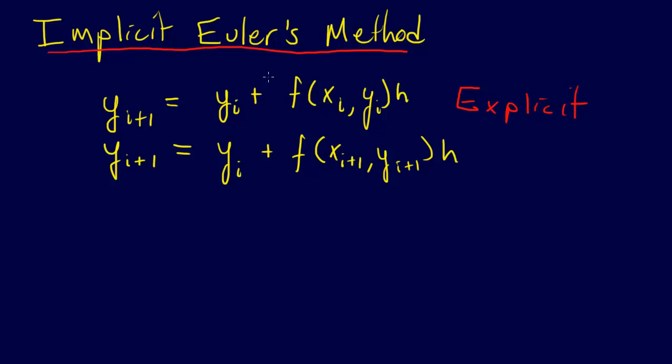So the explicit Euler's method was yi plus 1 equals yi plus some estimate of the derivative.